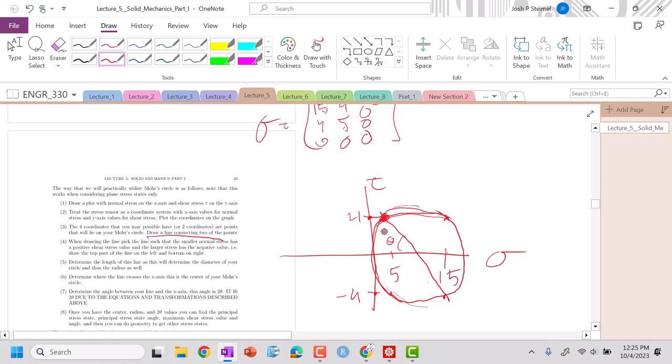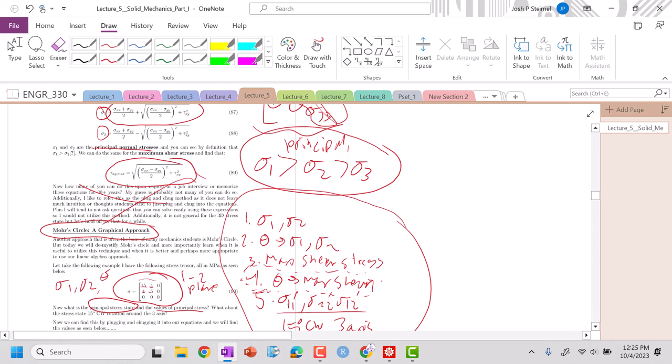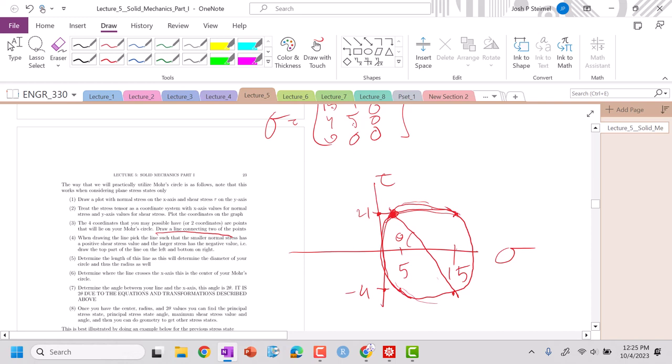So we can now start to solve for those exact same questions. We wanted to know what is our maximum or principal normal stress state, and what's the angle that it took to get there? Well, we could do this quite easily. If I am lying flat on this line here, and I have a point here and a point here, this is my sigma 1, this would be my sigma 2, and if I'm lying flat on this line, I have no shear stresses. Therefore, I'm in the principal stress state.